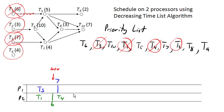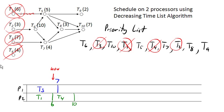We'll assign task four to processor two. Task four has a time of four units, so this is going to take us out to ten units of time. I apologize if my scale is a little off here, but hopefully you can follow along. So task four is started.